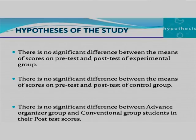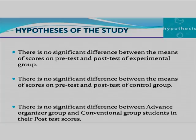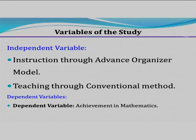Based on the hypotheses: there is no significant difference between means of scores on pre-test and post-test of the experimental group; and there is no significant difference between advanced organizer group and conventional group students in their post-test scores. Independent variables: instruction through advanced organizer model and teaching through conventional method. Dependent variable: achievement in mathematics.